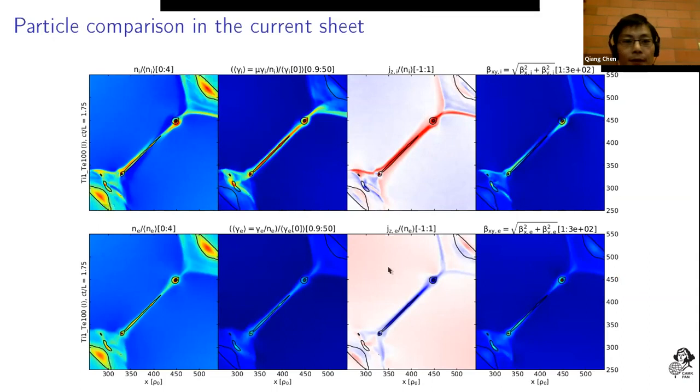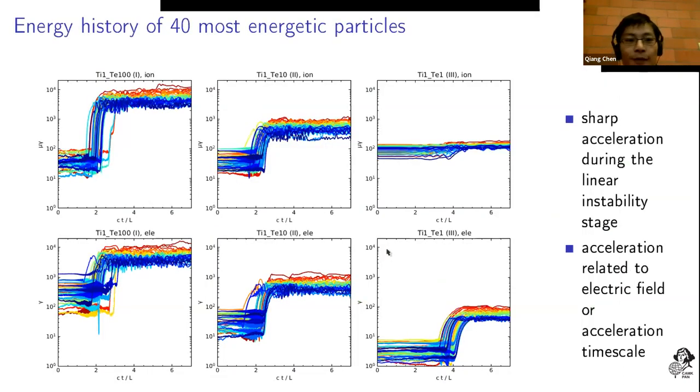We also performed individual particle tracking. Here is showing the most energetic particles, the top 40 particles for the three type simulations. Type one in the first column, type two and type three. The upper rows are the ion cases and the bottom electrons. You will notice that there is an abrupt increase in the particle energy. This indicated the linear instability states.